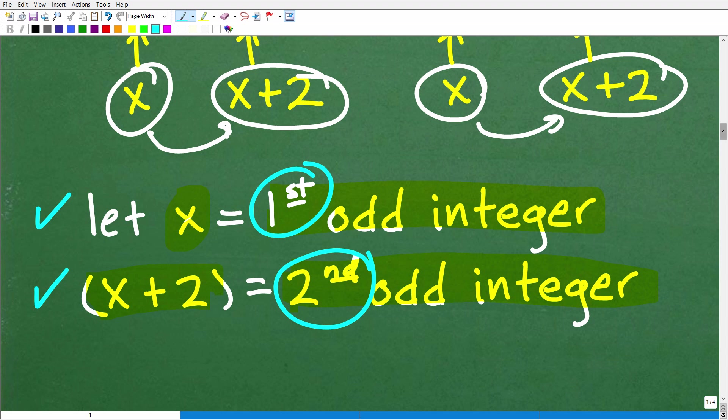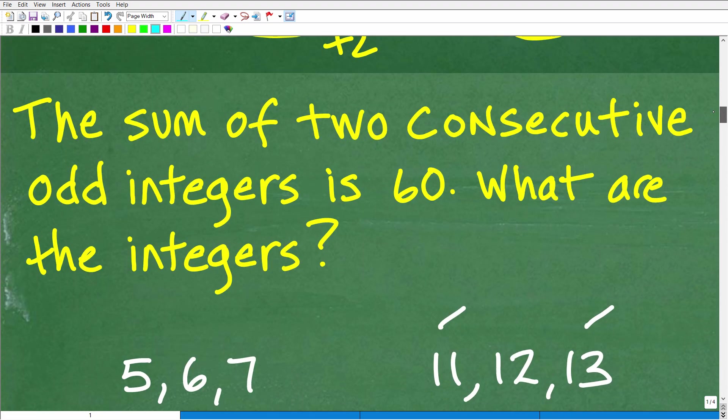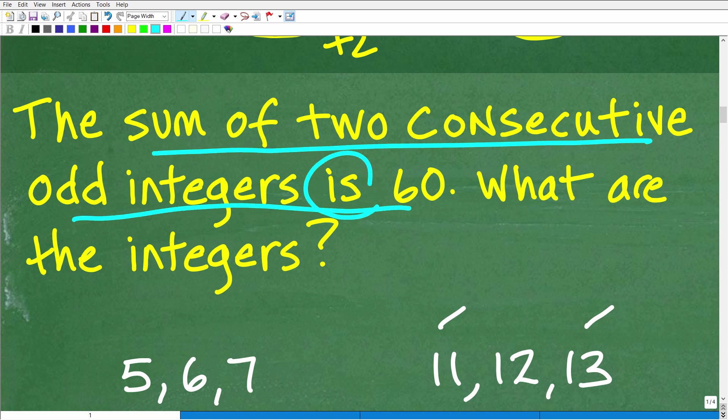So we'll have our first number and our second number. So now we need to go back up to this part of the problem. The sum of two consecutive odd integers is equal to 60.